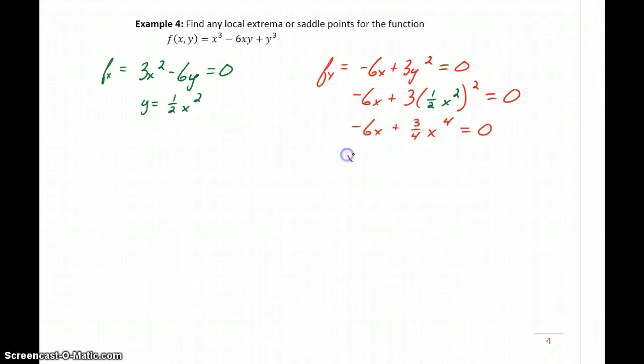We can factor out an x and then just reorder the inside terms here to get x times 3 fourths x cubed minus 6, still equal to 0. So this gives us two different equations to consider or two different possibilities. Either x is equal to 0, or 3 fourths x cubed minus 6 is equal to 0. So with x equals 0, there's nothing left to solve there. So x equals 0 is one of our points to consider.